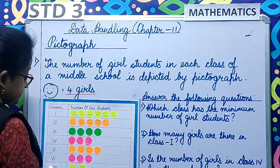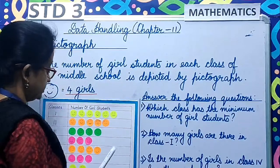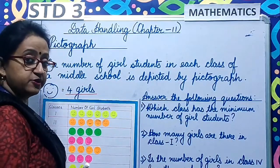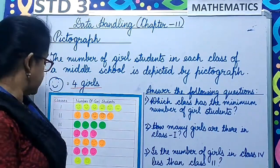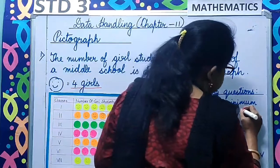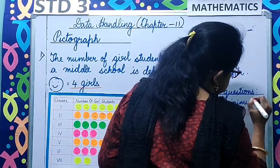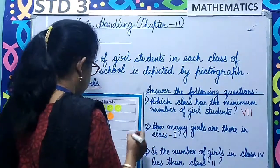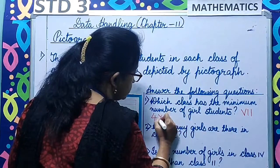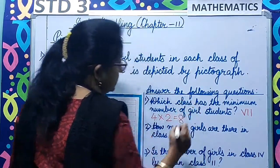Class 7 has 2 smileys: 2 into 4 gives 8. So which class has the minimum number of girl students? Class 7. So we write 7 here. You can also show the working: 4 into 2 makes it 8.